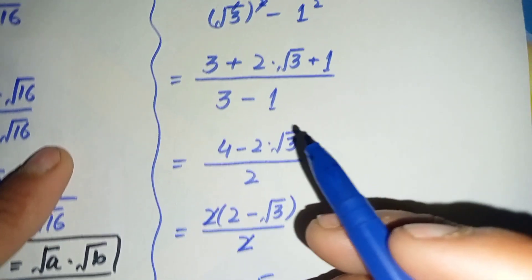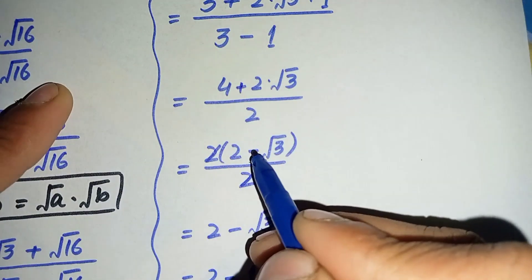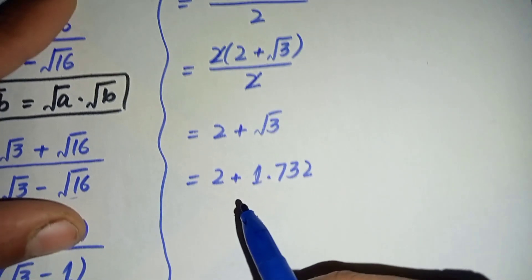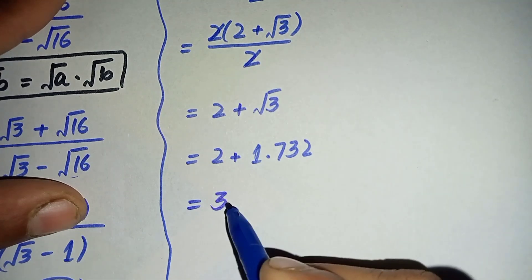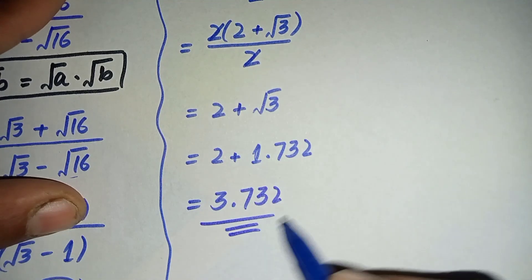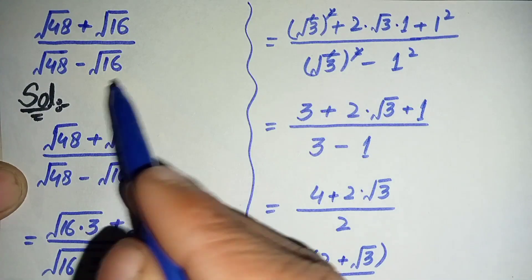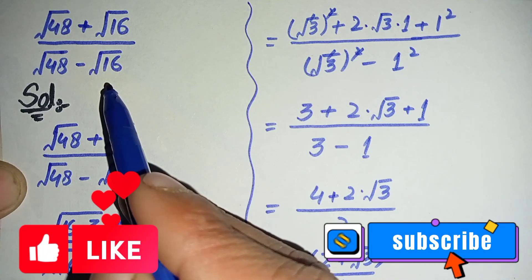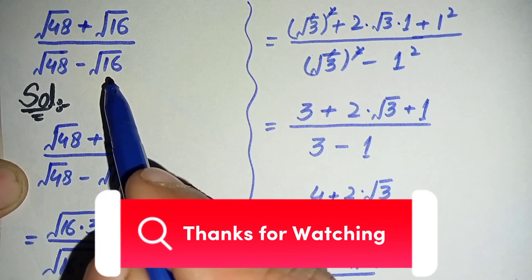Sorry, I made a mistake — the sign should be plus throughout, so the final answer is 2 plus square root of 3. That's the final answer to this nice radical math problem. Don't forget to subscribe to our YouTube channel for more interesting math videos. Thank you so much for watching, take care, see you in the next video, bye bye.